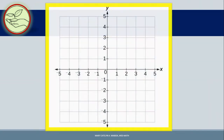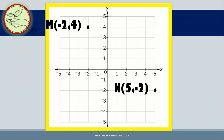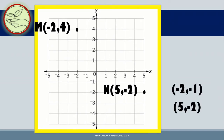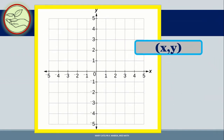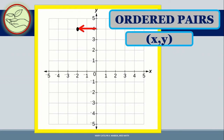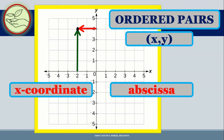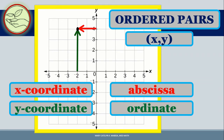Now, look at the rectangular coordinate system. Every point on the plane corresponds to exactly one pair of coordinates called ordered pairs. The ordered pair, denoted by the symbol (X, Y), where X is the directed distance of the point from the Y-axis and Y is the directed distance of the point from the X-axis. These numbers are called the coordinates of a point. For example, point O with coordinates (−2, 4): −2 is the abscissa and 4 is the ordinate.